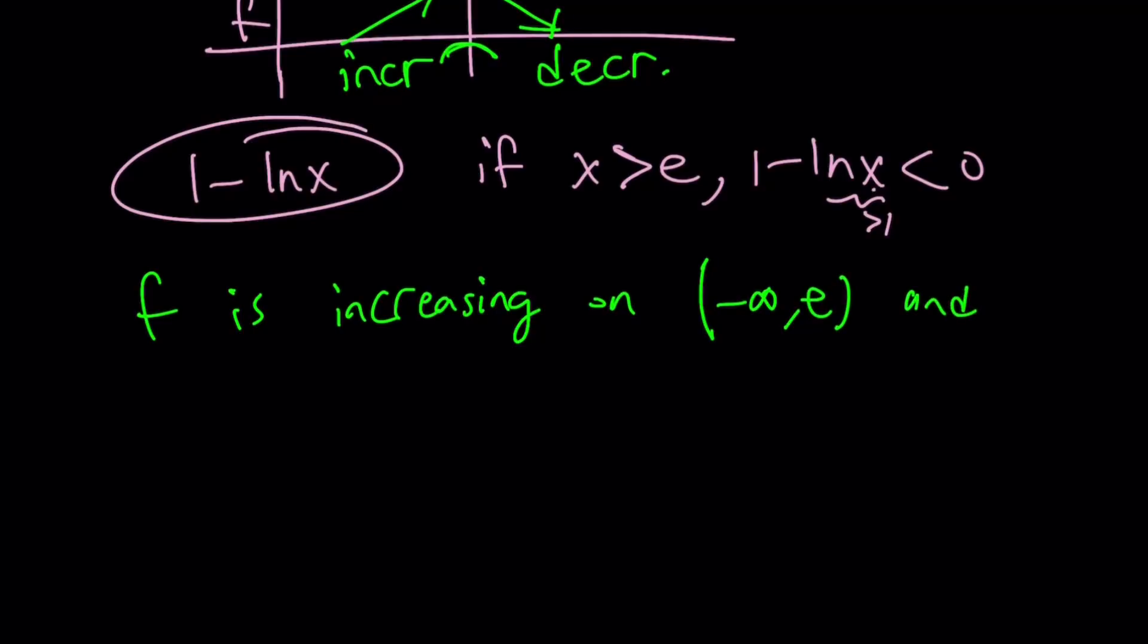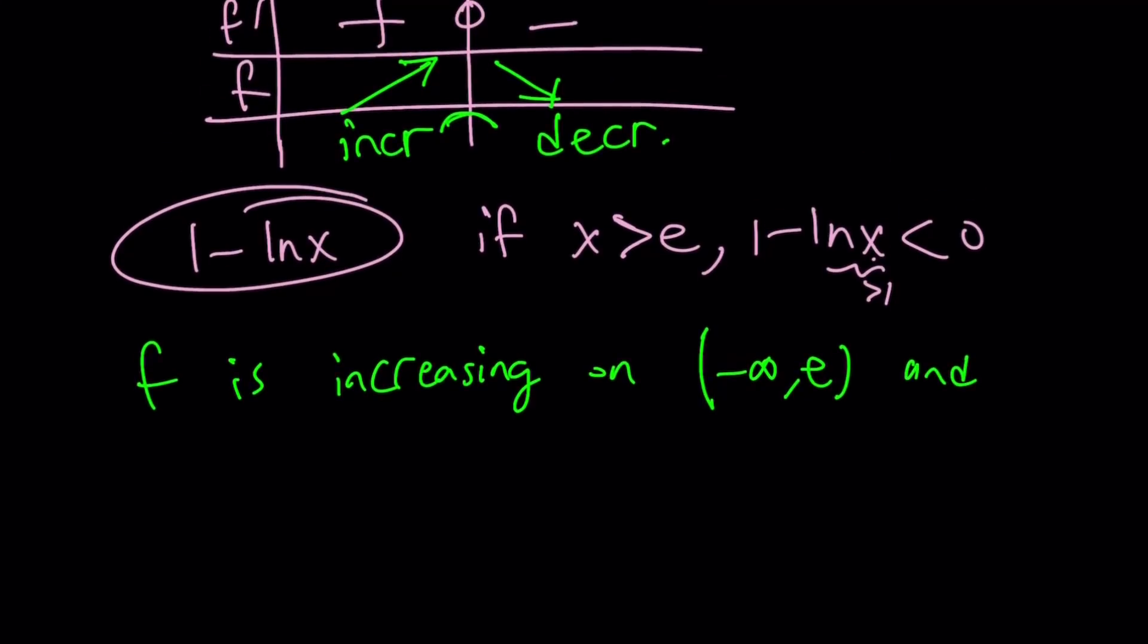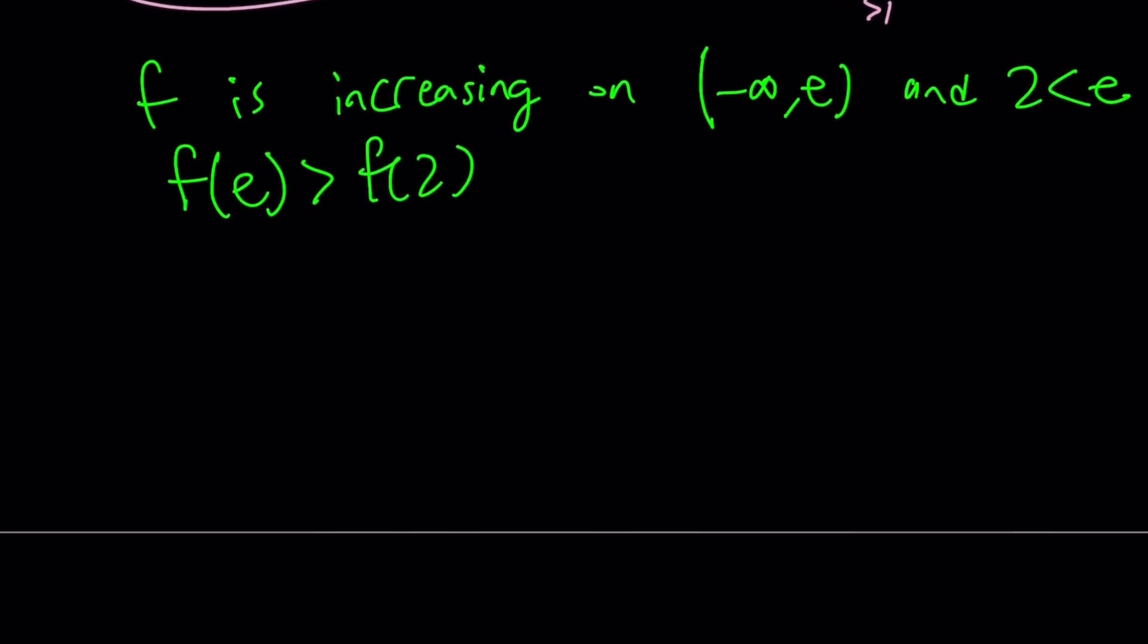f is increasing on negative infinity to e. And so, our function is increasing for x values that are less than e and 2 is less than e. So, that means f of e is going to be greater than f of 2. And when I show you the graph, this is going to make much more sense.